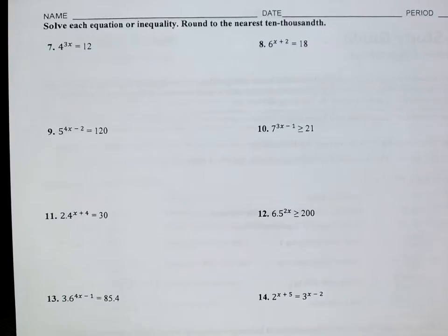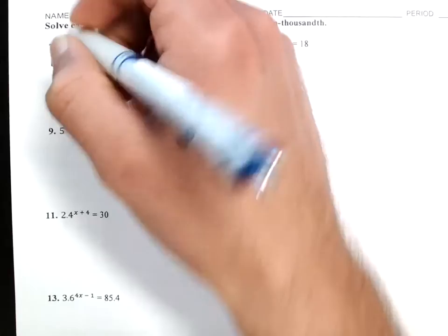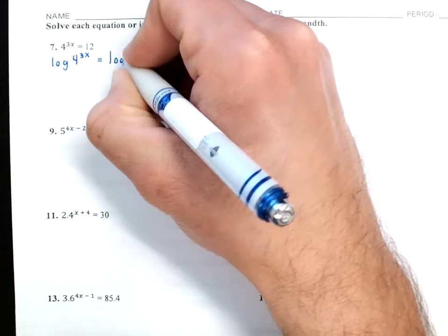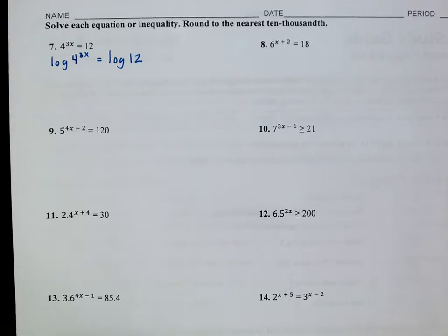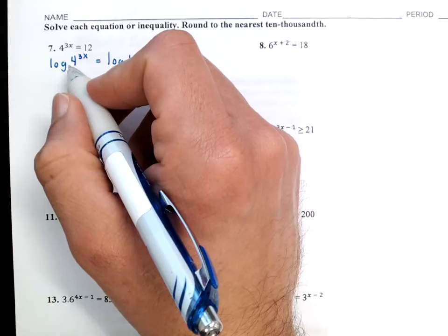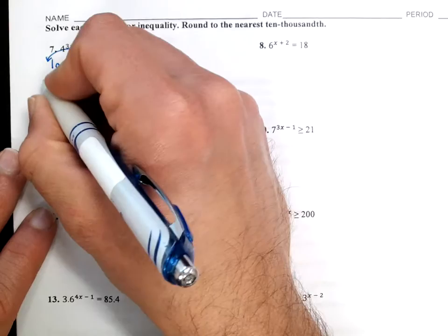So essentially this is what I'm saying: we're going to take the log — and this log is actually log base 10, even though we never write the 10. We have the log of 4 to the power of 3x equals the log of 12. I'm taking the logarithm of both sides. The logarithm properties say I can bring this 3x from the exponent in front of the log, so this becomes 3x times log of 4 equals log of 12.